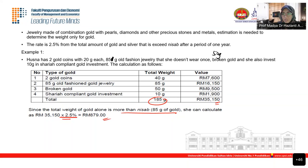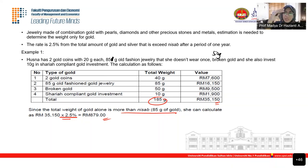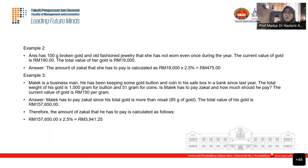Second category: gold jewelry worn by women. Jewelry obtained for personal use as ornament and used lawfully by women is generally not zakatable. However, if the amount exceeds the customary amount (uruf), zakat will be imposed. In Malaysia, the customary limit varies by state. Selangor and Wilayah Persekutuan: 800g — excess above 800g is zakatable at the difference. Terengganu: 850g. Pahang: 500g but taxed on total. Negeri Sembilan and Melaka: 200g. Perlis: 170g. Penang: 165g. Kelantan: no uruf limit — if you wear it, it's not zakatable regardless of amount.